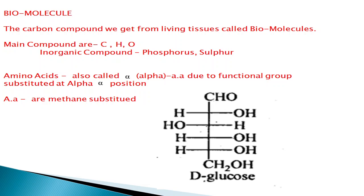Our body is made up of molecules that are present in the highest amount. The carbon compounds we get from living tissue are called biomolecules. The main elements are carbon, hydrogen, and oxygen — others are also present, but when we talk about biomolecules we consider these mainly. Plants, animals — all of us have a very important role for carbon, and all of us have a high amount of it as a base.